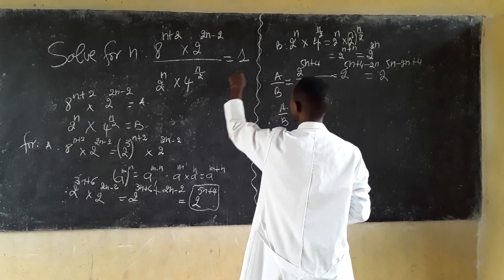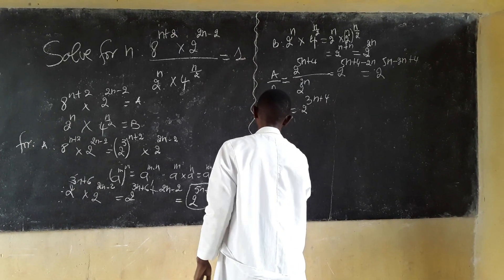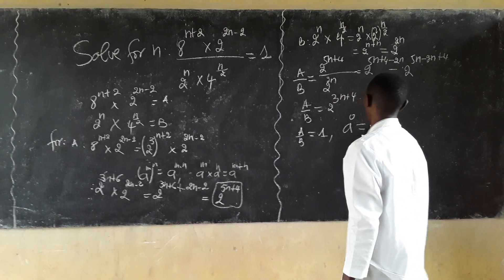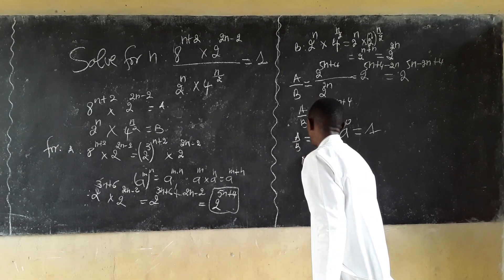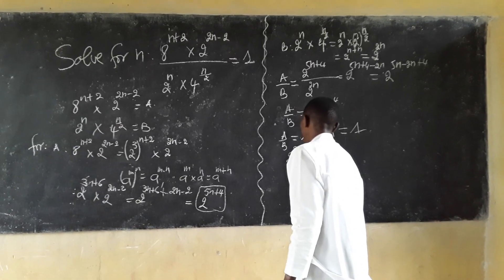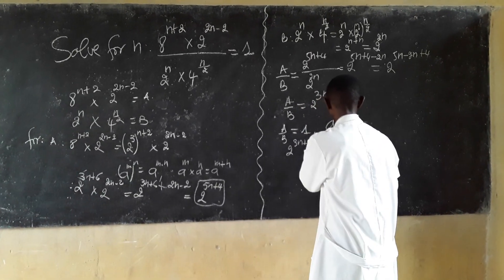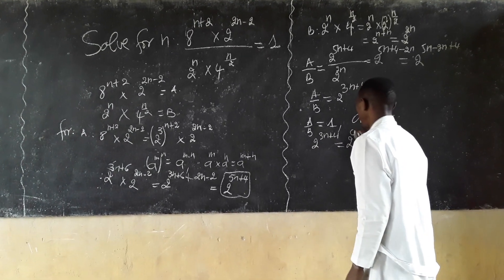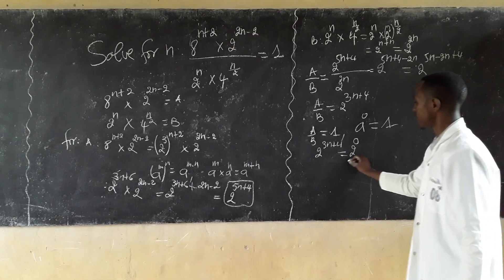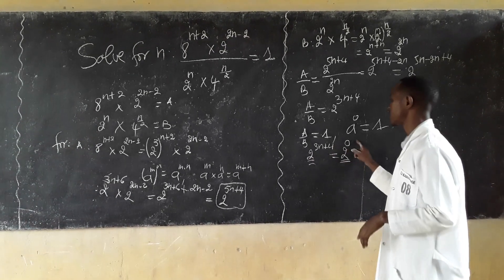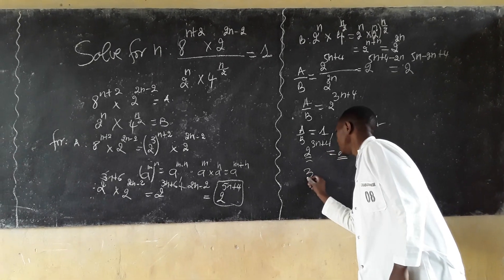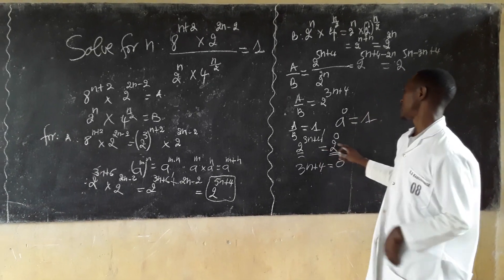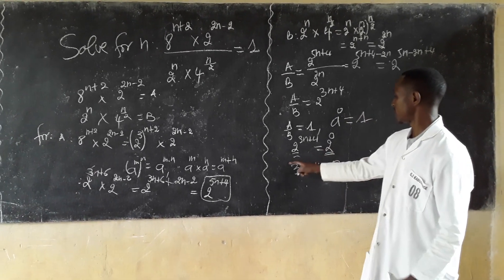So H over V equals 2 power 3n plus 4, and this is equal to 1, which is equal to 2 power 0. Since the bases are the same, we can equate the exponents: 3n plus 4 equals 0.